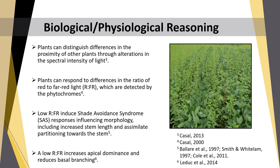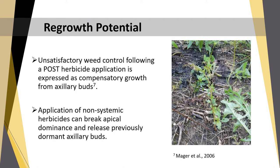A low red to far-red ratio increases apical dominance and reduces basal branching. When referring to regrowth potential in the case of an unsatisfactory post-herbicide application, it is expressed as compensatory growth from axillary buds. This is particularly important when spraying non-systemic herbicides, since they kill the upper portion of the plant, breaking apical dominance and releasing previously dormant axillary buds.